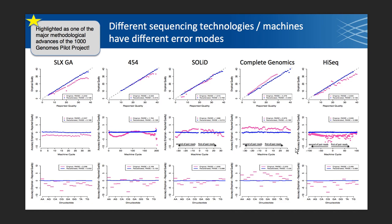For paired-end sequencing, we can see that we underestimate base qualities at the start of the read and overestimate them at the end for SOLiD — or underestimate them at the end for SOLiD. For HiSeq, we have a tendency to overestimate them and then have better base quality assessments towards the end of the reads. At the bottom, I'm showing again the dinucleotide context for each of these sequencing samples, and you can see that this pattern can vary differently between all of these samples on these different sequencing platforms.